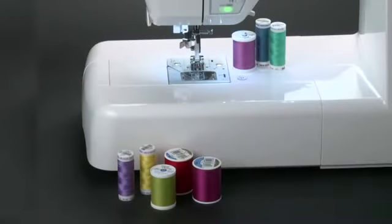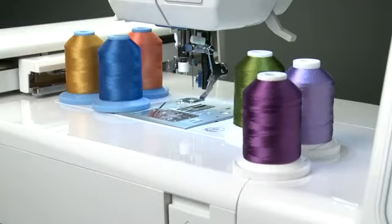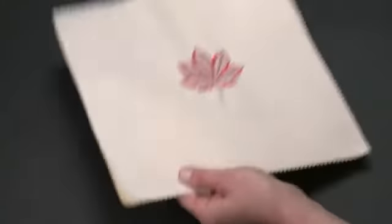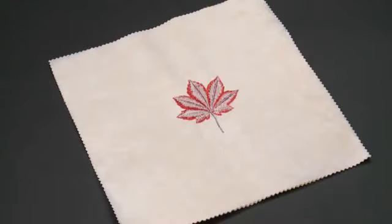To thread your machine for regular sewing, it is common to use an all-purpose thread in the needle and the bobbin. However, for embroidery, it is most common to use a rayon or polyester thread in the needle. For the bobbin, it is best to use a lighter weight thread such as bobbin fill. By using a lightweight thread in the bobbin, your embroidery designs will be less dense on the back than if standard weight thread is used.